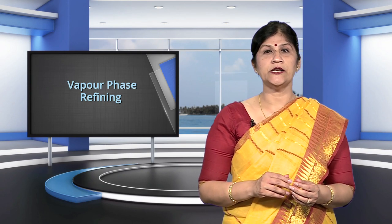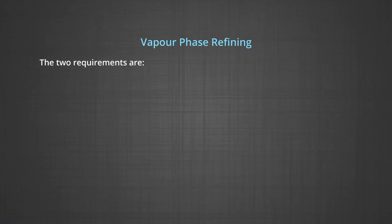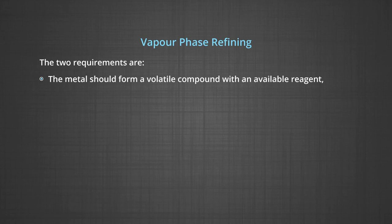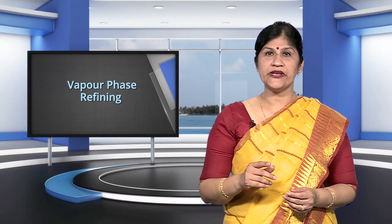Next method is vapor phase refining. In this method, the metal is converted into its volatile compound and collected elsewhere. It is then decomposed to give pure metal. So, the two requirements are, the metal should form a volatile compound with an available reagent. And second, the volatile compound should be easily decomposable, so that the recovery is easy.